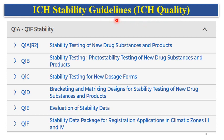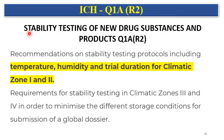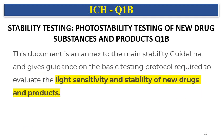There are ICH guidelines which provide complete understanding of stability requirements. From Q1A to Q1F, stability guidelines are there: Q1A, Q1B, Q1C, Q1D, Q1E and Q1F. ICH Q1A deals with stability testing of new drug substances and new drug products and gives recommendations on stability testing protocols including temperature, humidity and trial duration for climatic zones 1 and 2, as well as requirements for climatic zones 3 and 4 to minimize different storage conditions for global submissions.